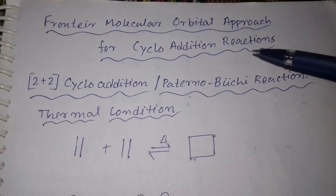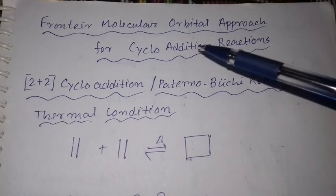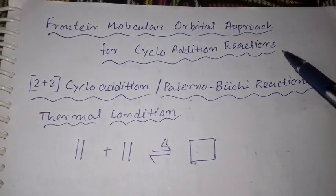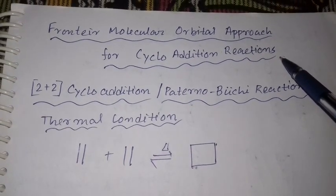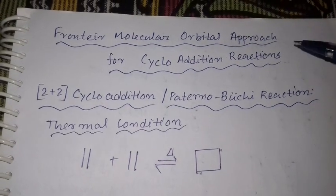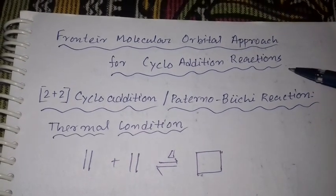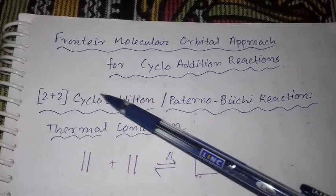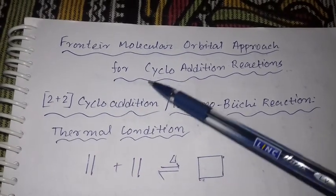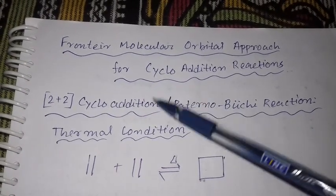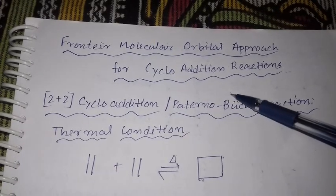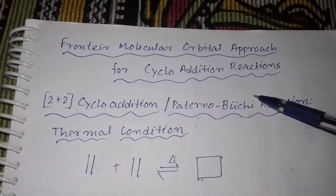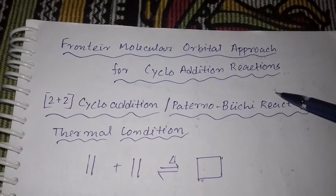Today's discussion is on the frontier molecular orbital approach of cycloaddition reactions. In cycloaddition reactions, two pi electronic systems react with each other to form a cyclic product.